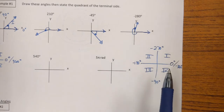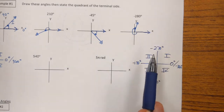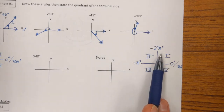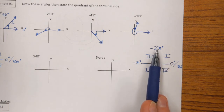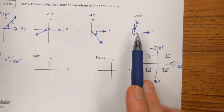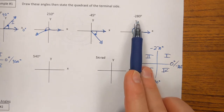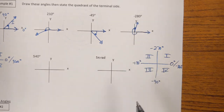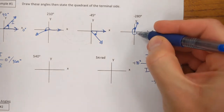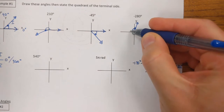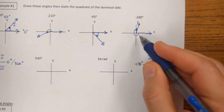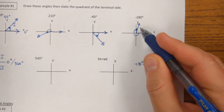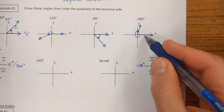Negative 280 degrees is in between negative 270 and negative 360 — closer to the negative 270 — so it's going to be right here in quadrant one. You can see how I drew my terminal side, and since it's a negative angle, that directional arrow must go clockwise, showing the angle opens downward from the initial side.